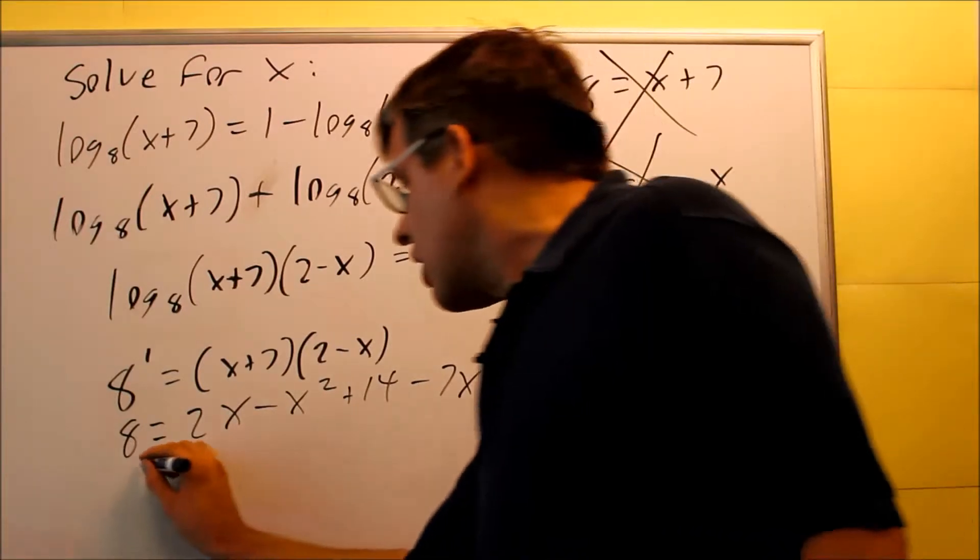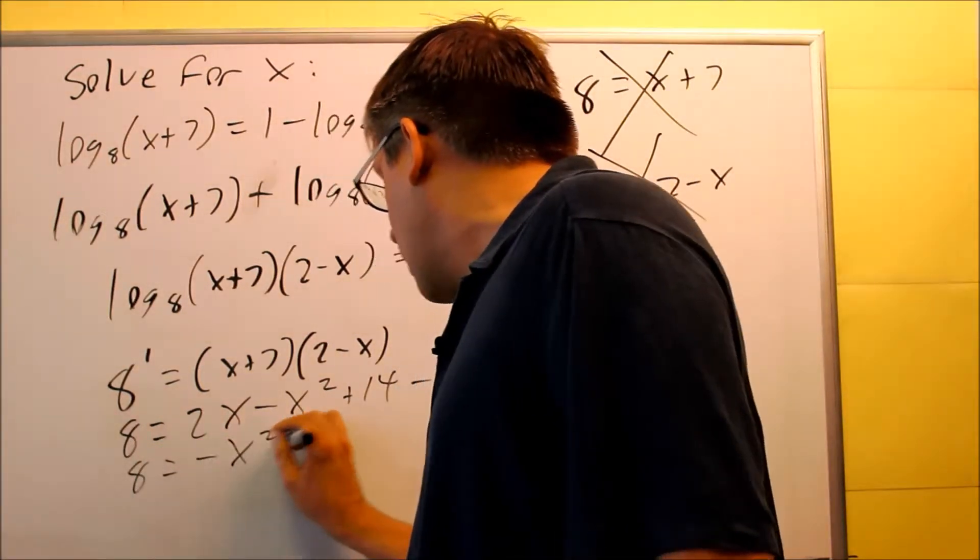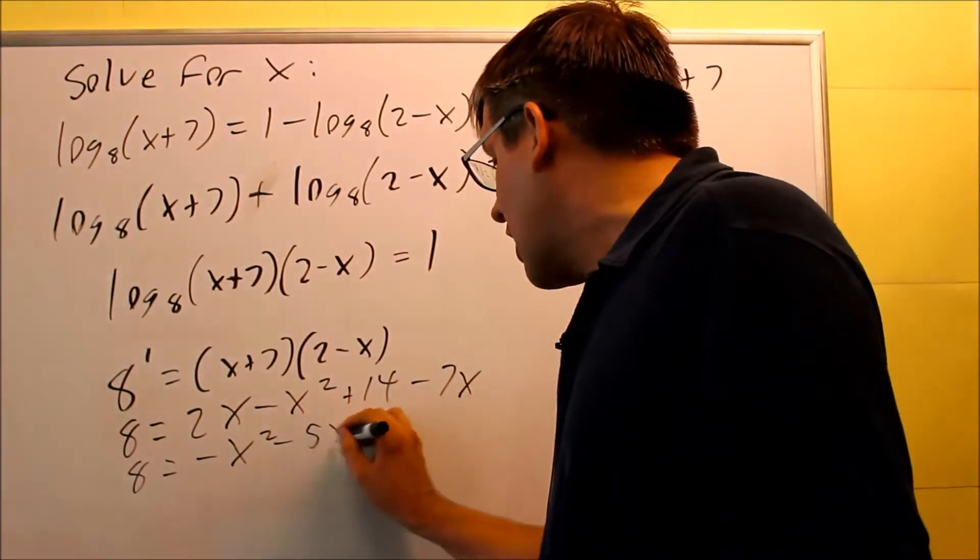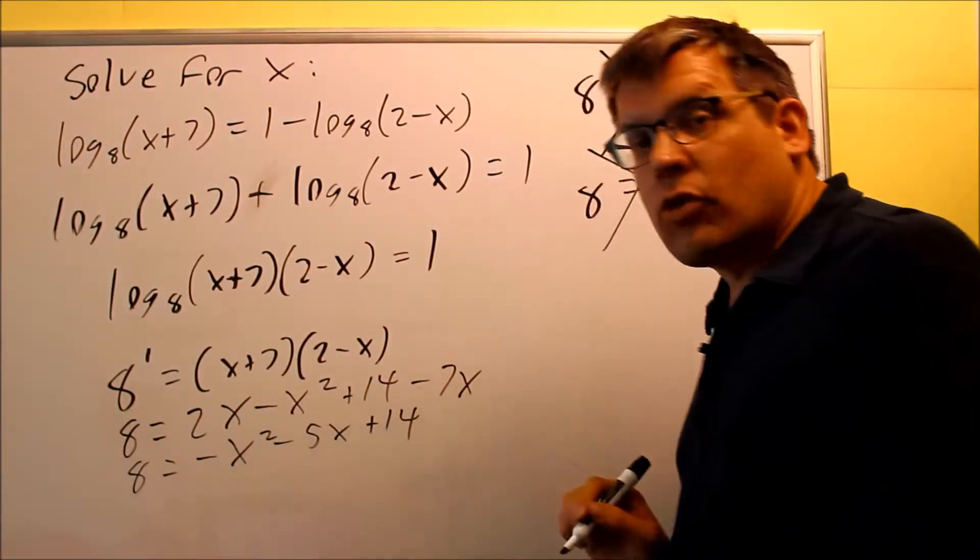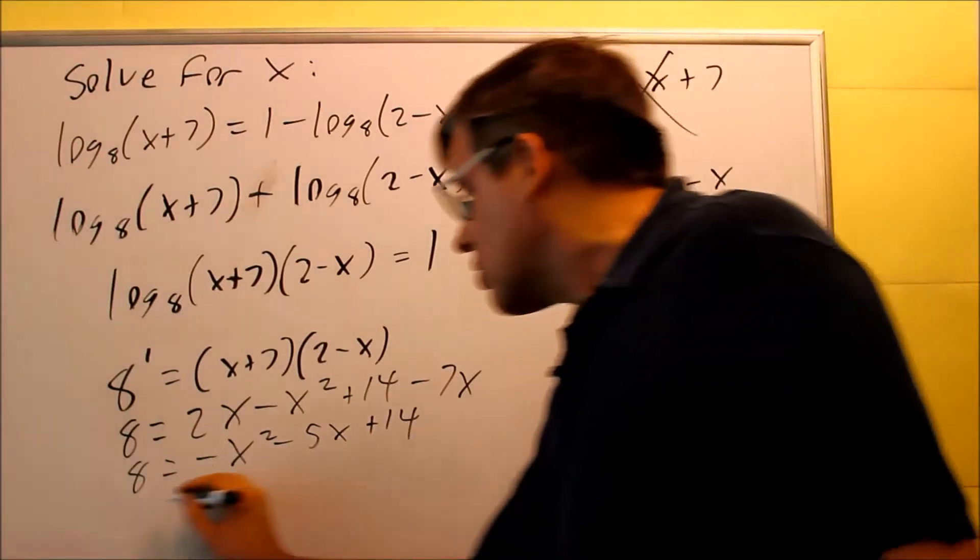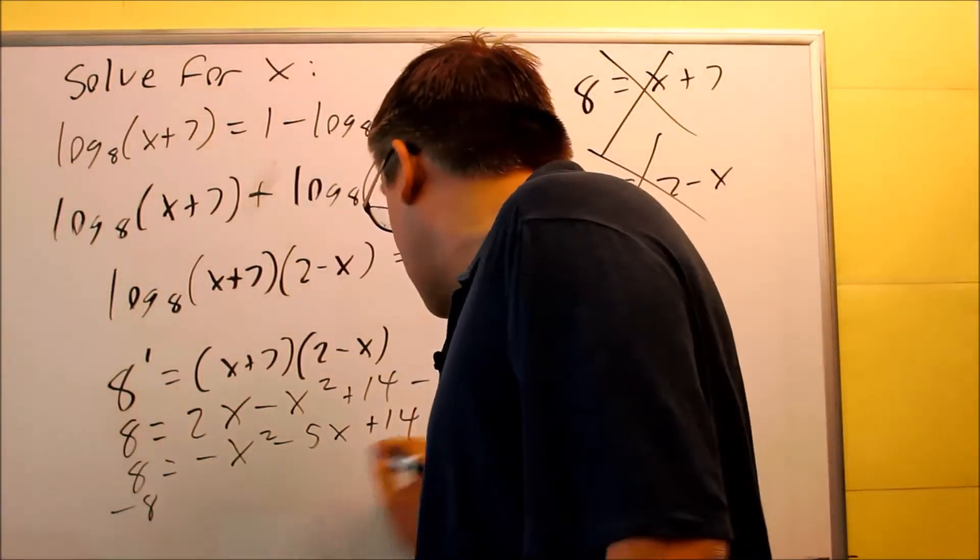I'm going to add my like terms together. So I get negative x squared. Like terms, I have 2x minus 7 is minus 5x. And then plus 14. You want us to subtract the 8 and get it to be equal to 0. So we're going to subtract 8 here, subtract 8 from there.